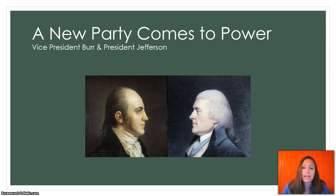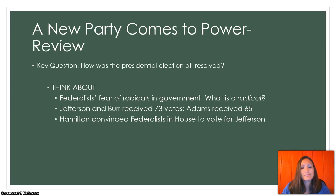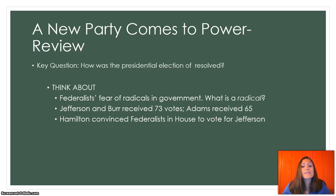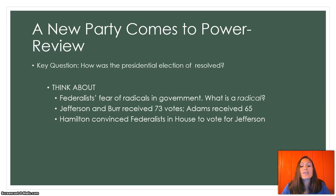Here are pictures — Burr on the left and Jefferson on the right. The key question we're reviewing: how was the presidential election resolved? Things to think about: the Federalists' fear of radicals in government, Jefferson and Burr each received 73 votes while Adams got 65, and Hamilton convinced Federalists in the House to vote for Jefferson. Those are some clues to answer the question of how the presidential election was resolved.